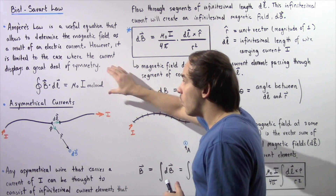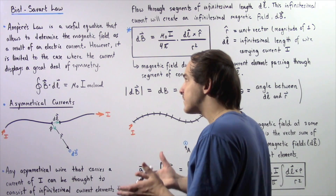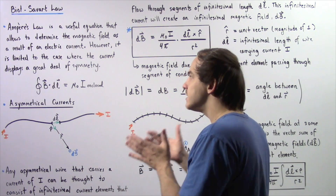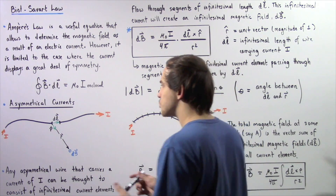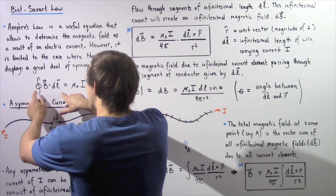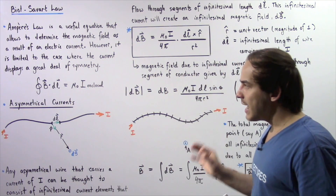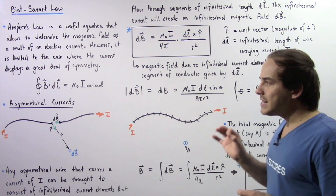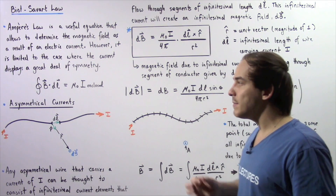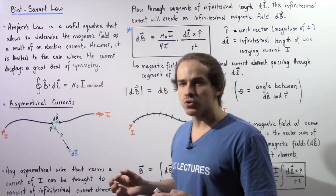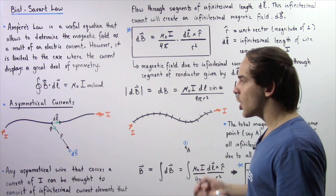We can only apply Ampere's Law as long as our electric current displays a great deal of symmetry, so that we can calculate this with ease. Now let's discuss the case when our electric current is not symmetrical — let's examine asymmetrical wires that carry electric current.